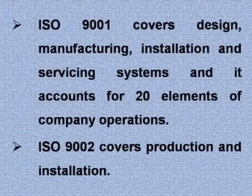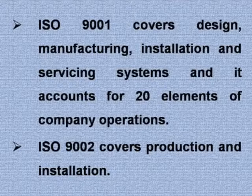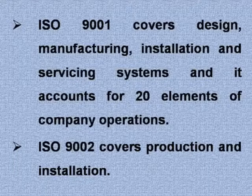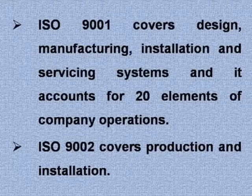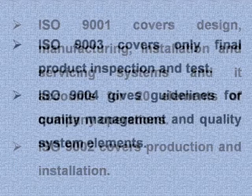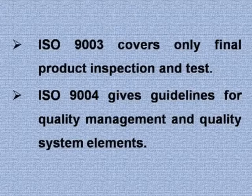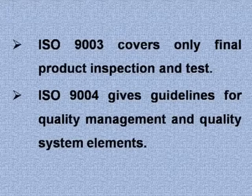ISO 9001 covers design, manufacturing, installation and servicing system, and it accounts for 20 elements of company operations. ISO 9002 covers production and installation. ISO 9003 covers only final product inspection and test. ISO 9004 gives guidelines for quality management and quality system elements.